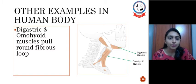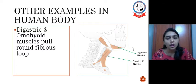Other examples in human body are digastric and omohyoid muscles which pull round fibrous loop of the hyoid bone. Here we can see the digastric muscle from one end to another end origin insertion and here is the omohyoid muscle and in between there is a hyoid bone.